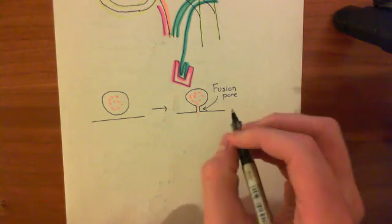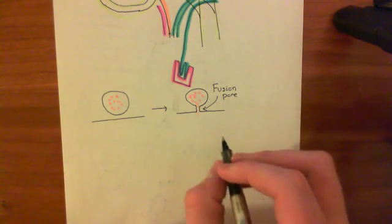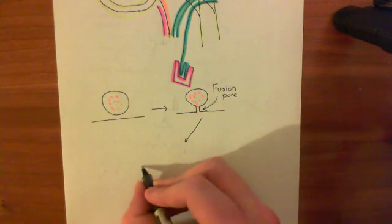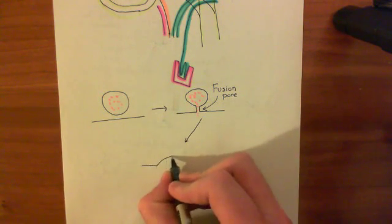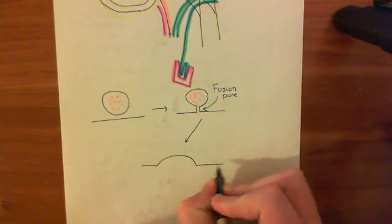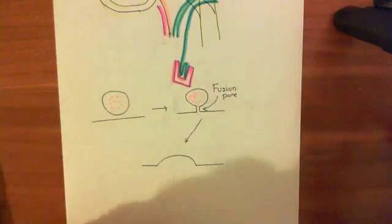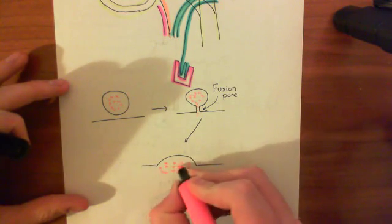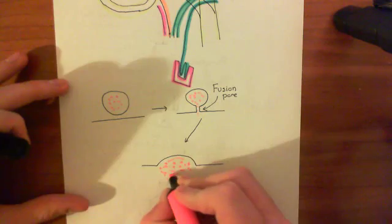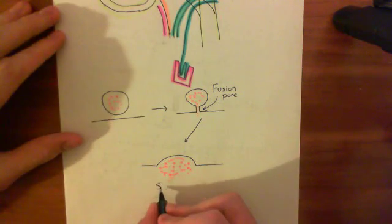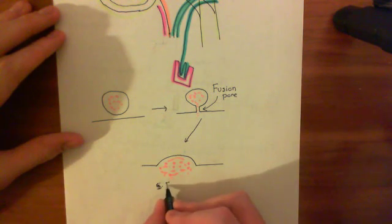What can follow is two different things. Either the membrane can go on to fuse completely — so the synaptic vesicle fuses completely and releases all of its neurotransmitter into the synaptic cleft, giving you a massive release of neurotransmitter. This will be full fusion.